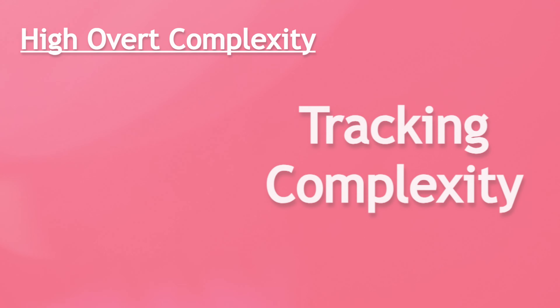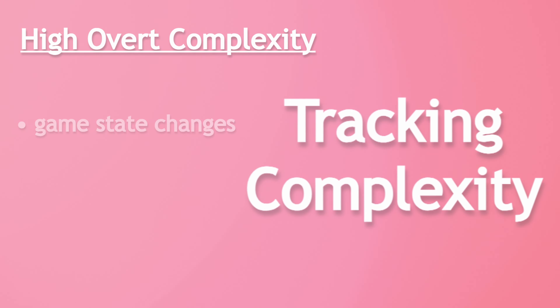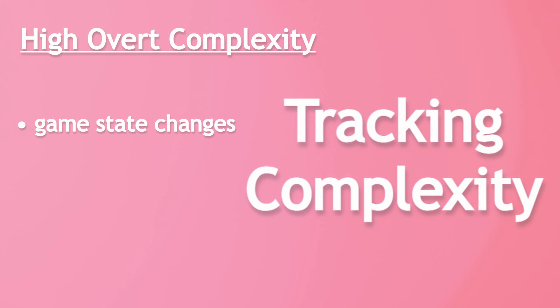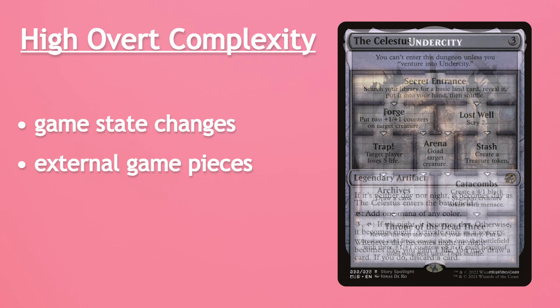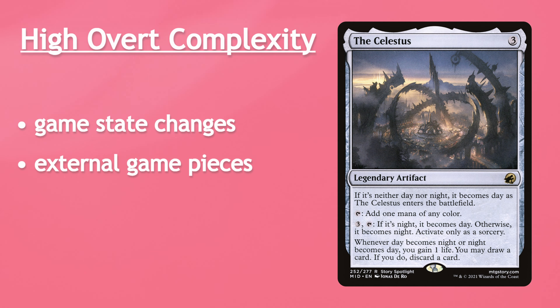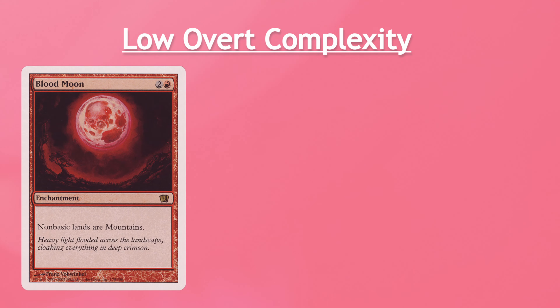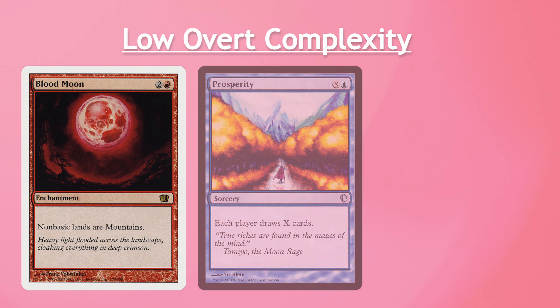Now there are two different types of complexity within Magic. The first is what we'll call overt complexity. Overt complexity is the visible complexity inherent in a card's individual mechanics and rules text. Let's take a look at a few examples of cards with this type of complexity. From one of Magic's latest sets, the card Yenna Redtooth Regent.